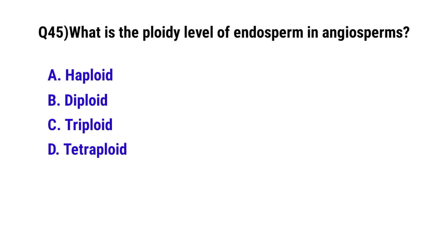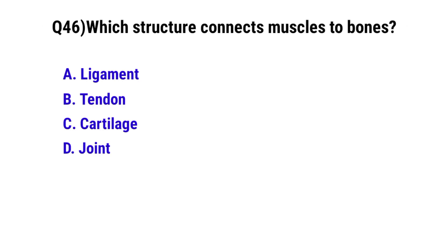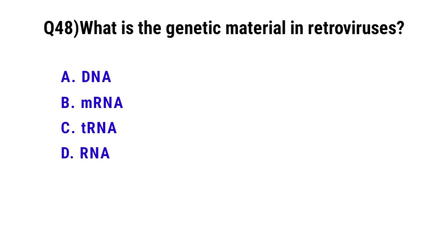Question 45: What is the ploidy level of endosperm in angiosperms? The correct option is D: triploid. Question 46: Which structure connects muscles to bones? The correct option is B: tendon. Question 47: Which vitamin is synthesized by intestinal bacteria? The correct option is D: vitamin K. Question 48: What is the genetic material in retroviruses? The correct option is D: RNA.